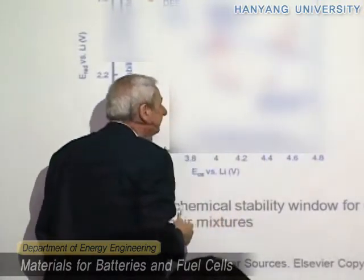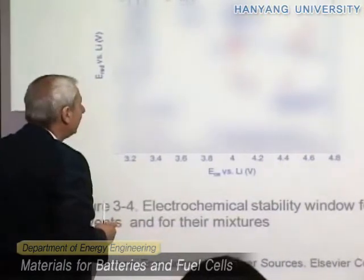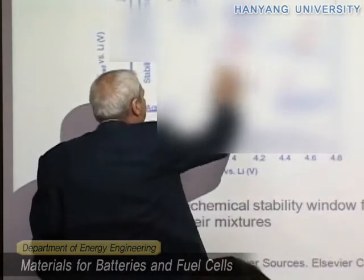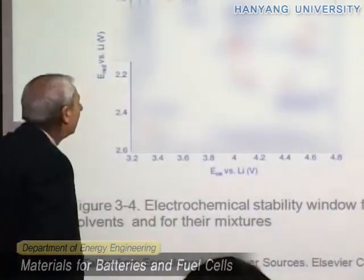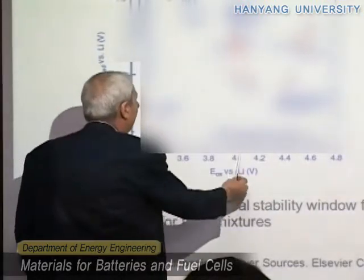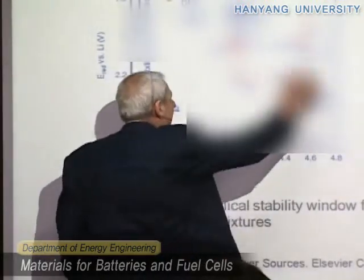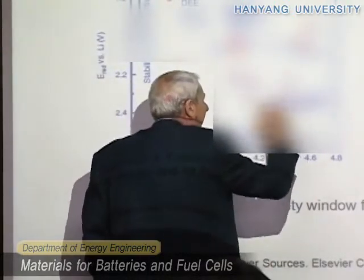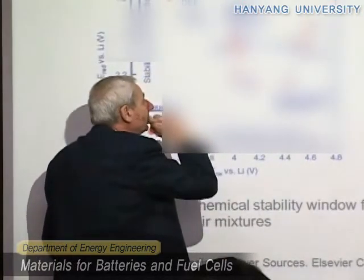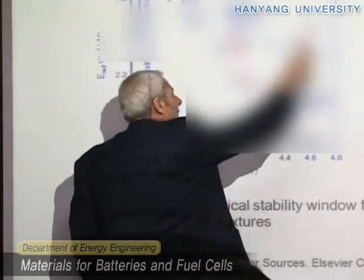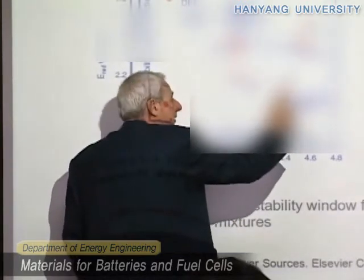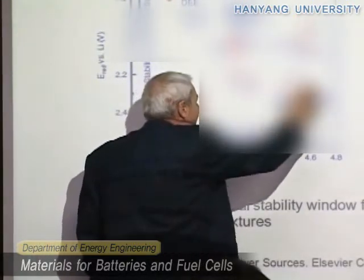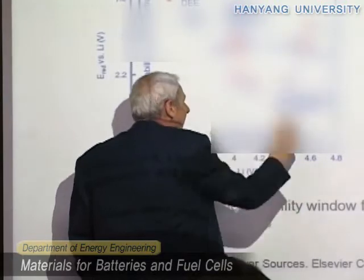But for instance, we cannot use linear carbonates like these, as discussed before, because these decompose around 4 volts, so it's not possible to use them. We can use EC or PC alone, but it's not a good idea because they have very high viscosity so the conductivity is low. And PC cannot be used with graphite because it decomposes the graphite. So we use the mixtures, and the most popular ones are these.